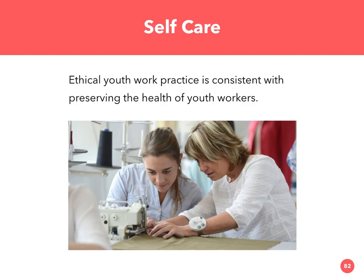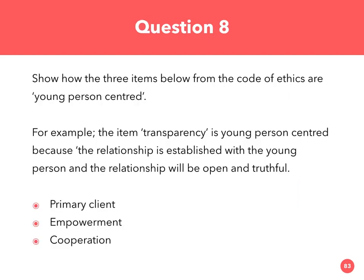The assessment asks you to show how three items from the code of ethics — primary client, empowerment, and cooperation — are person-centred. You can probably see how important the code of ethics is as the foundation of a youth worker's practice. You might also notice that there can appear to be some tension between these codes and the work in boarding, where you are responsible for a whole group and maintain structures for order — but these ethics should always be the foundation of your work.